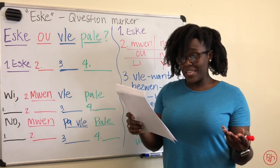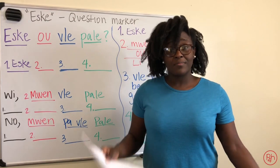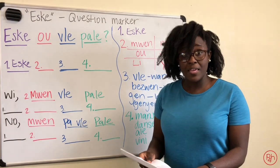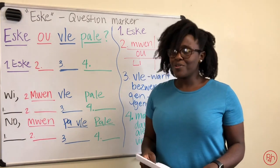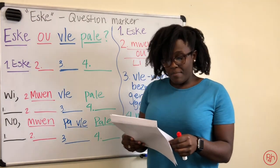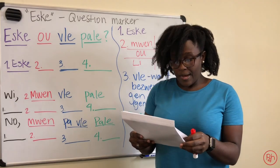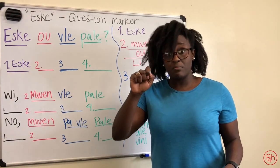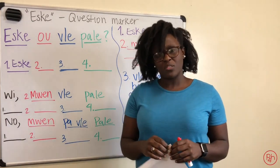For example: est-ce que ou vle habillé? Do you want to get dressed? Oui, mouin vle habillé. Or non, mouin pas vle habillé. Est-ce que ou vle écrit? Would you like to write? Oui, mouin vle écrit — yes, I want to write. You could also say besoin instead of vle.